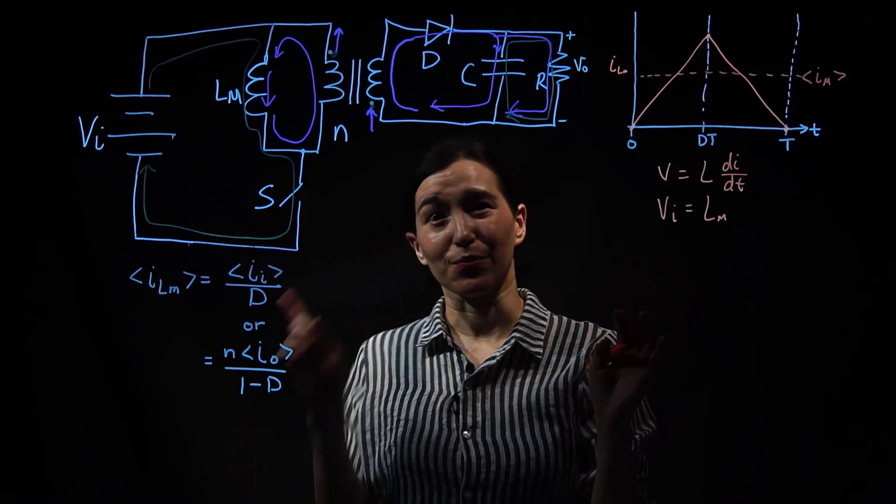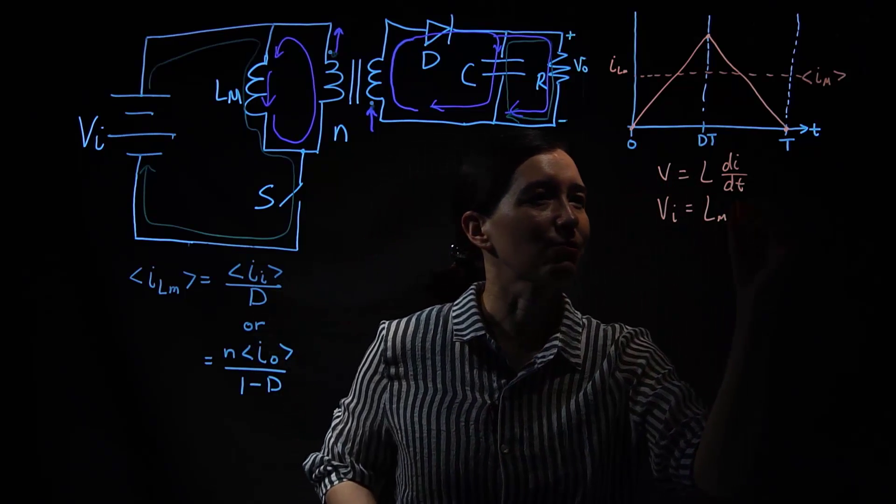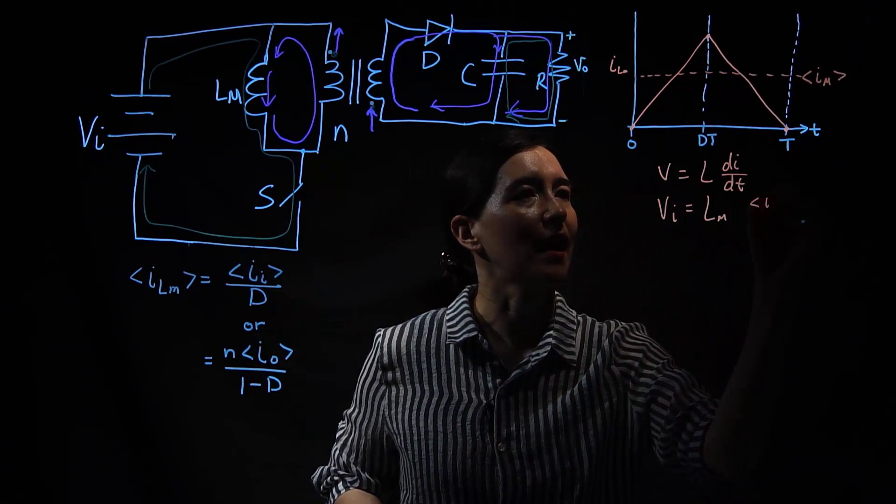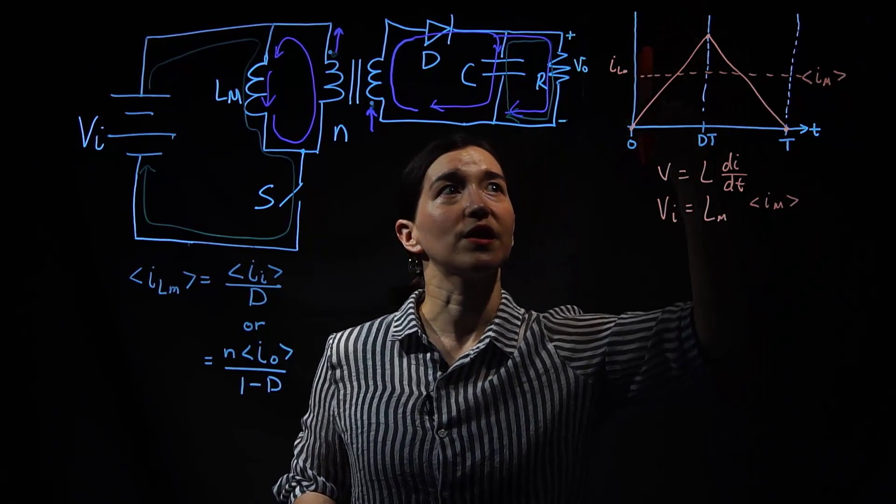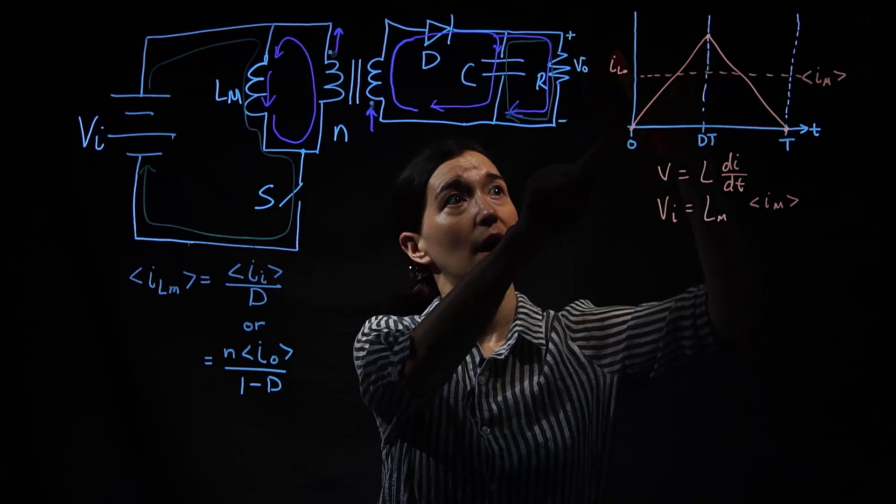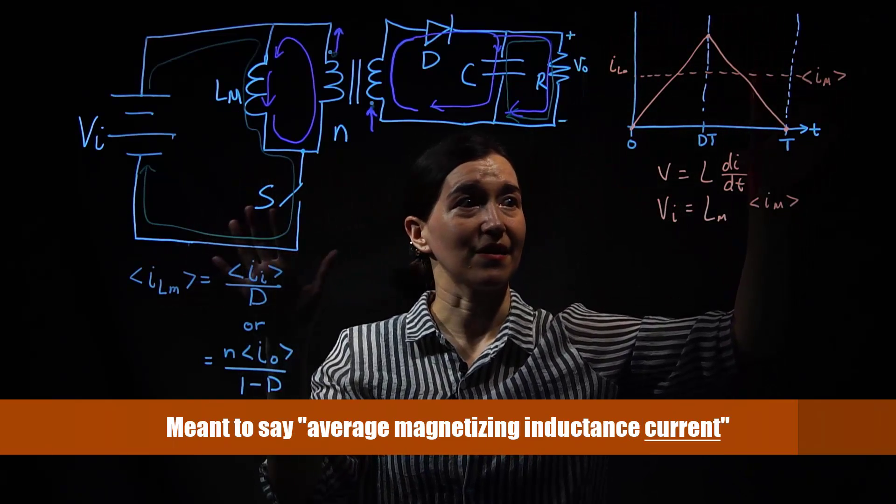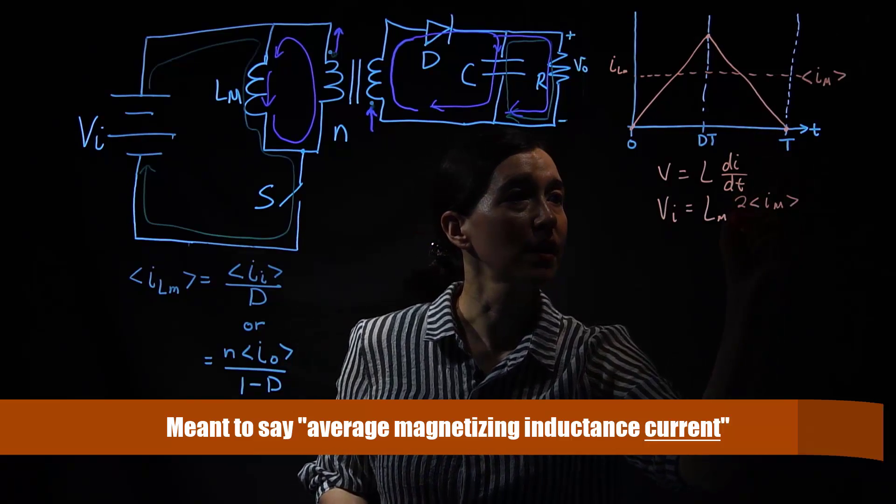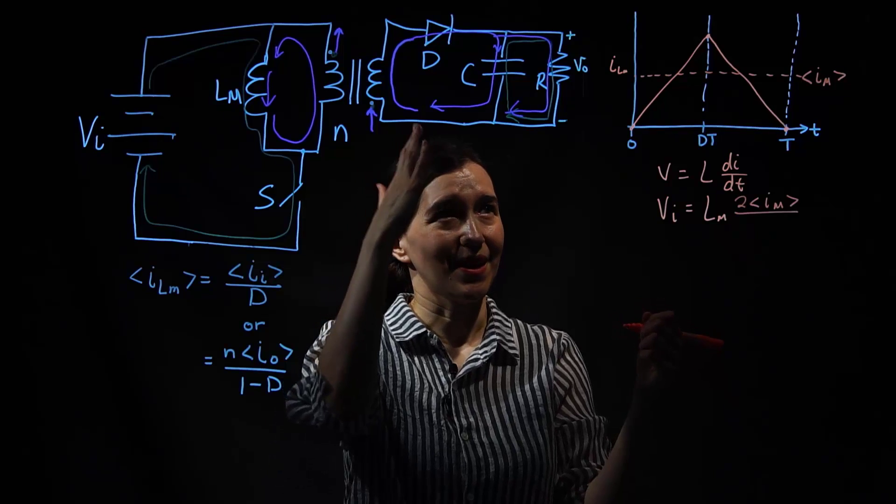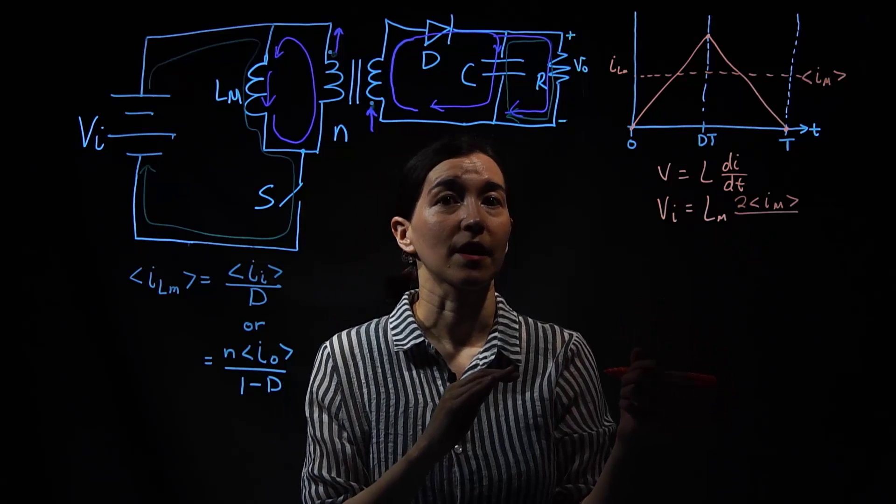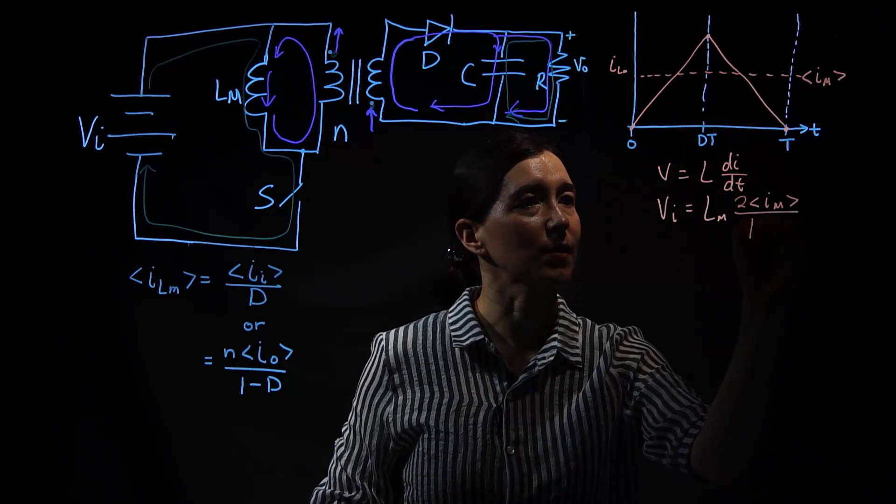We figured that out in a previous video. So it's actually written here, but I'm just going to write average Im here. And because it's a critical value, we need to go to twice that because it's going up and down. So the average value is going to be that average magnetizing inductance. So we're going to be two times that for the critical conductance. So boundary conduction mode. Then dt is just from zero to dt here. So that's just going to be dt.